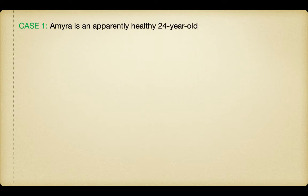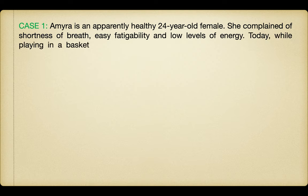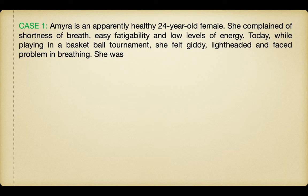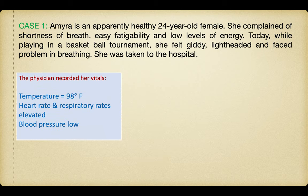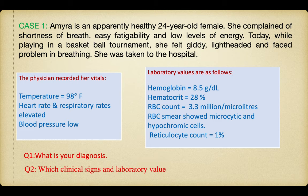Case one: Amyra is an apparently healthy 24-year-old female complaining of shortness of breath, easy fatigability, and low energy levels — all pointing toward anemia. While playing in a basketball tournament she felt giddy, lightheaded, and had difficulty breathing. The physician examined her vitals: temperature was normal, heart rate and respiratory rate were elevated, blood pressure was low. Lab investigations showed hemoglobin 8.5, hematocrit reduced, and RBC smear showed a microcytic hypochromic picture. The questions are: what is your diagnosis, and which clinical signs and laboratory values show the body is compensating?